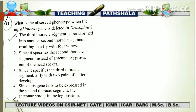If we talk about the thorax region, it contains a total of 3 thoracic segments: T1, T2, and T3. In T1, there is only a pair of legs and no further appendages. In T2 and T3, there are further appendages as well. In T2, there is one pair of legs and one pair of wings. In the T3 region, there is one pair of legs and one pair of halteres. This was the overall phenotype of all 3 segments in the thoracic region.